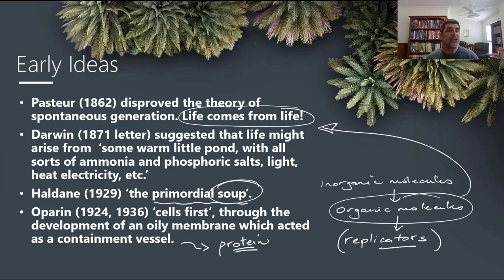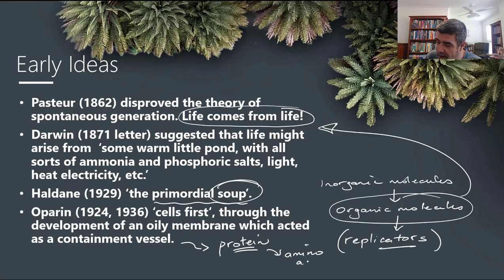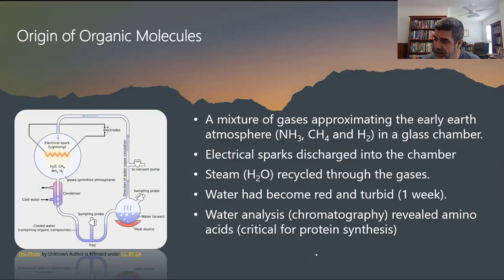Proteins are complex molecules. They're made of much simpler units called amino acids, and we recognize about 20 different types of amino acids. So how did these first amino acids form? This is the idea of the Uri-Miller experiment.